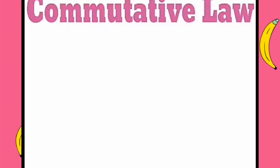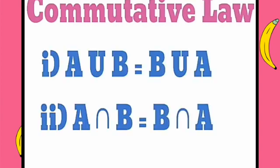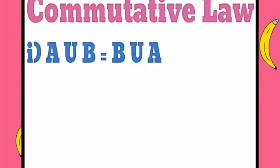The last property we will discuss in this video is commutative law. Commutative law has two laws. First law is A union B is equal to B union A, and second law is A intersection B is equal to B intersection A. So firstly we will prove A union B is equal to B union A.